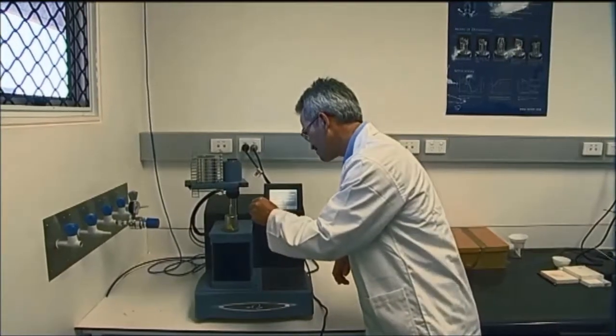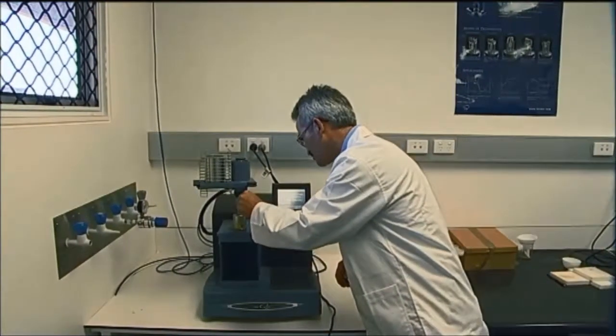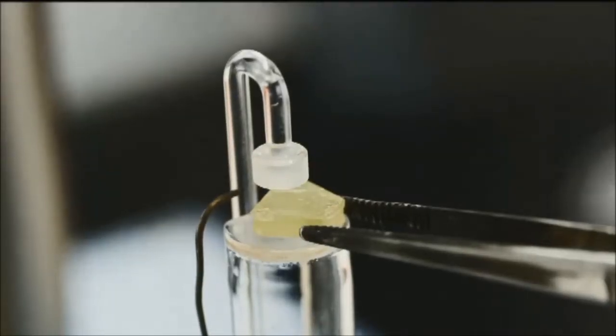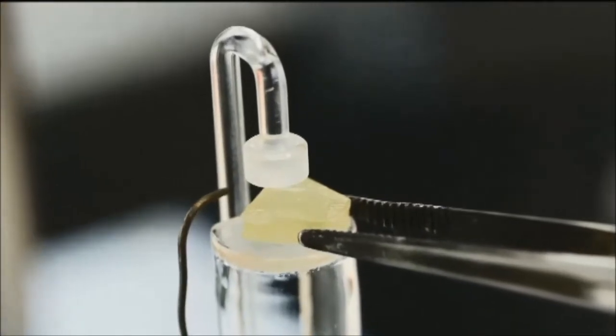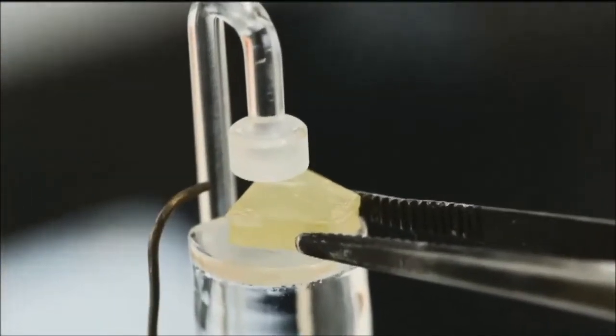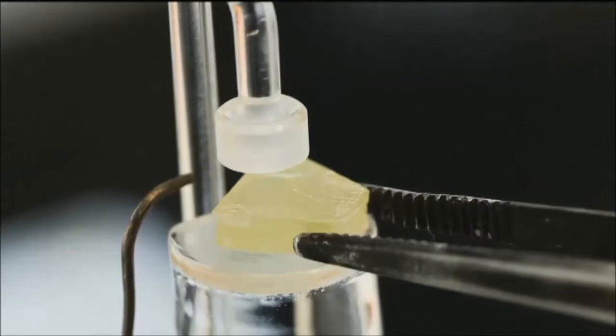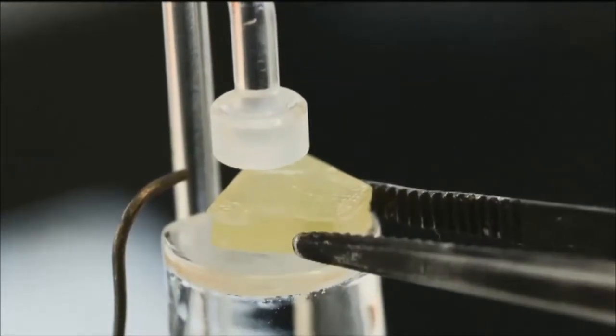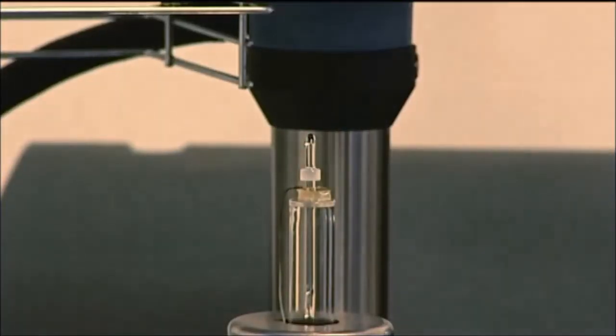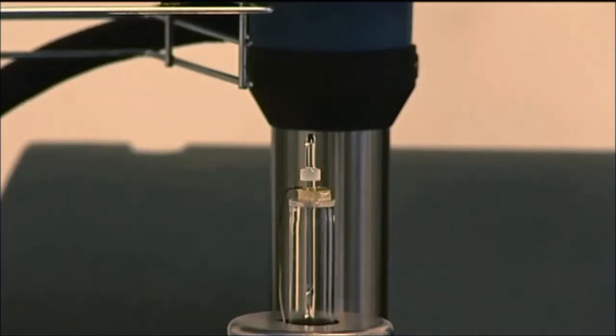The TMA applies a non-oscillating force at several frequencies over a temperature range. As the sample deforms, displacement is automatically measured. This allows one to see how pressure and temperature affect the volume of a material. Put the probe down.